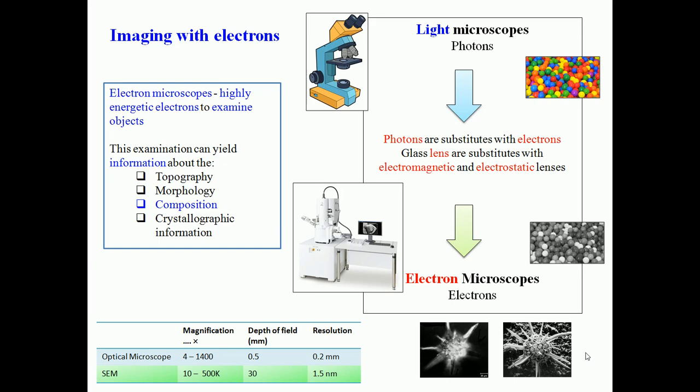A light microscope, or optical microscope, uses visible light to illuminate a material and see its enlarged image. Photons or electromagnetic radiations are used to see the surface of the sample. Visible light falls on the sample surface, reflects, carries information, and we see a colored image on our retina. This optical microscope has relatively less magnification.